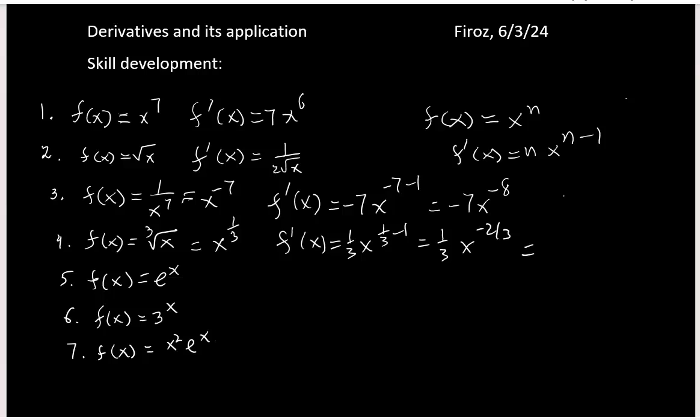If you want to write positive exponent, you can write 1 over 3 x to the 2/3. Next, you have e to the x, so the derivative of e to the x is e to the x.